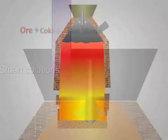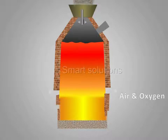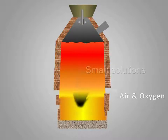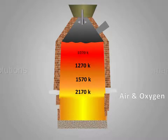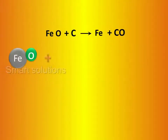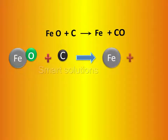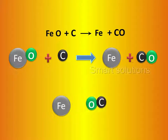In the blast furnace, hot air is blown from the bottom of the furnace. Coke is burned with the release of temperature up to 2200 Kelvin, providing the required temperature for the process. Iron oxide combined with carbon produces iron and carbon monoxide — this is the main reduction in this process.